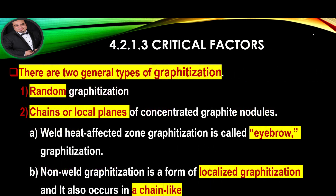There are two general types of graphitization. The first type is random graphitization. The second type involves chains or local planes of concentrated graphite nodules. Weld heat affected zone graphitization is called eyebrow graphitization. Non-weld graphitization is a form of localized graphitization that also occurs in a chain-like pattern.